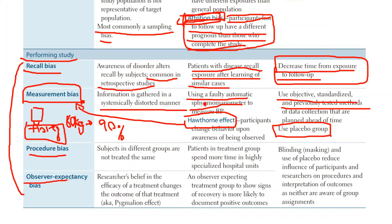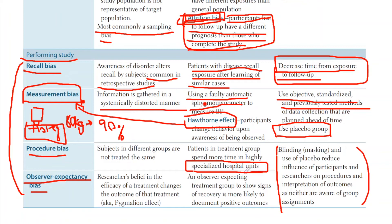Next we have procedure bias and observer expectancy bias — I'll explain them together because they're mitigated the same way. With procedure bias, one group is treated differently from another. Instead of the drug being the reason for success, it might be the different treatment conditions — for example, one group in a specialized hospital and another in a rural hospital. The better outcomes may not be from the drug but from the superior care environment.